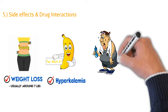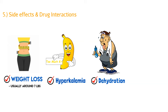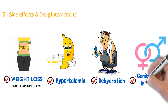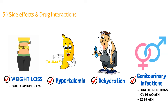Another side effect is dehydration, which makes sense because these medications make you urinate glucose and water follows — so patients urinate out more water, leading to dehydration. The last notable side effect is genitourinary infections — fungal or bacterial infections. Because patients are excreting more and more glucose, which is sugar, there's a chance of causing a fungal or bacterial infection since microbes thrive on sugar. This is seen more in women (about 10%) than in men (about 3%).